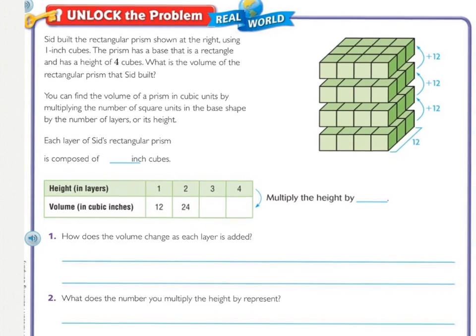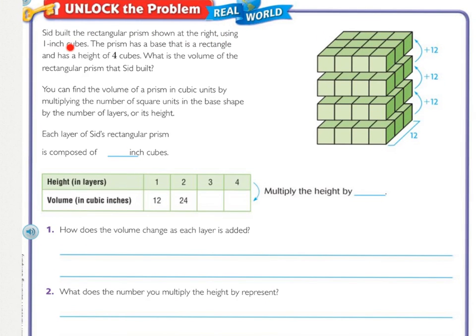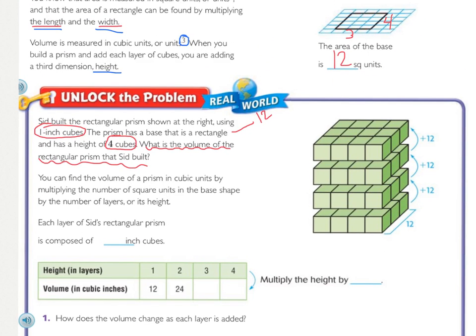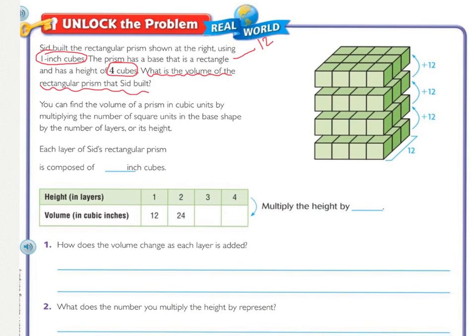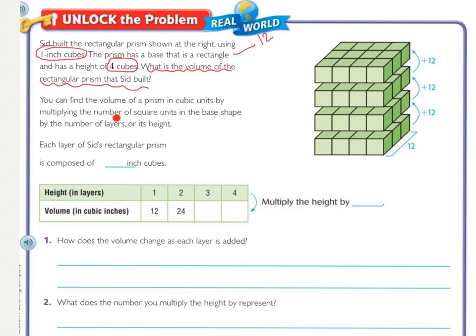Now moving on to unlock the problem. Sid built the rectangular prism shown at the right using 1 inch cubes. The prism has a base that is a rectangle, and has a height of 4 cubes. What is the volume of the rectangular prism that Sid built? So they're asking you to find the volume of the prism, and it's a rectangle with the same base that we figured out up here. So the width and the length are 3 by 4, so the area is 12, and then the height is 4 cubes.